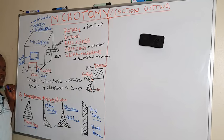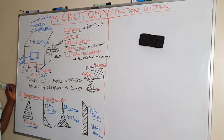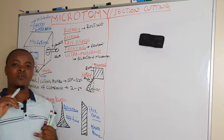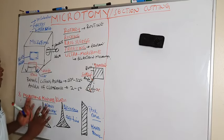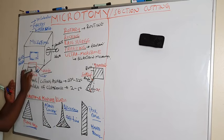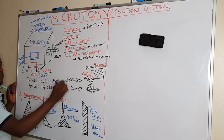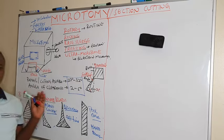The plane edge is used for hard tissues. So these are the different types of microtome knives: plane edge, planoconcave, biconcave, and tour edge. These are the ones that we fix on the microtome stage with the clips, putting into consideration the tilt angles.